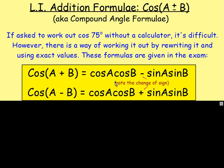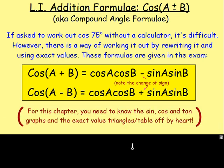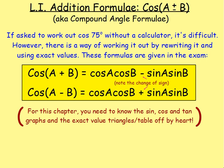So if you have cos A plus B, in the middle here you've got a minus. And if you have cos A minus B, in the middle here you have a plus. For this chapter, we're going to work out something like cos of 75 by rewriting it. But for that, you need your exact values — the sine, cos and tan graphs and the exact value triangles or table, by heart.